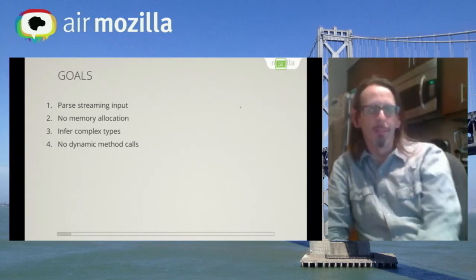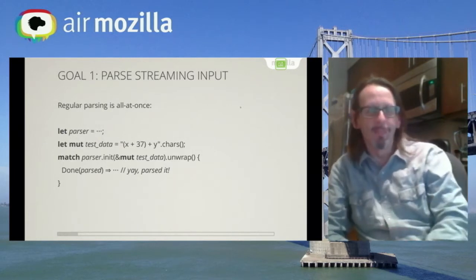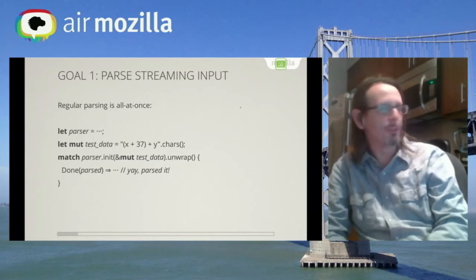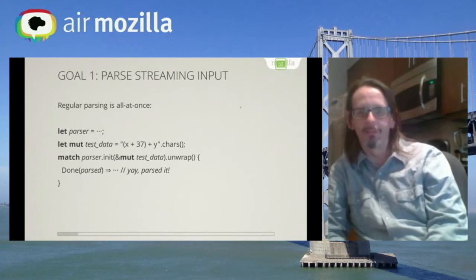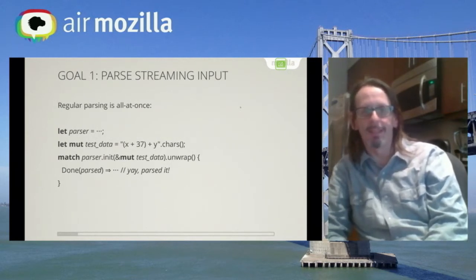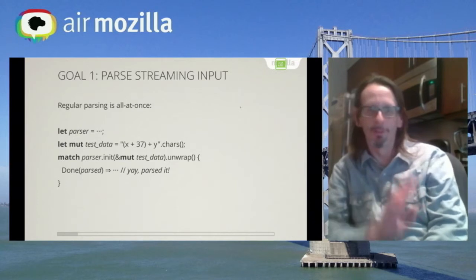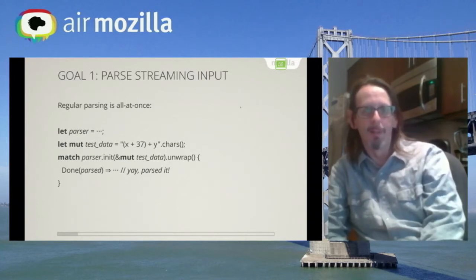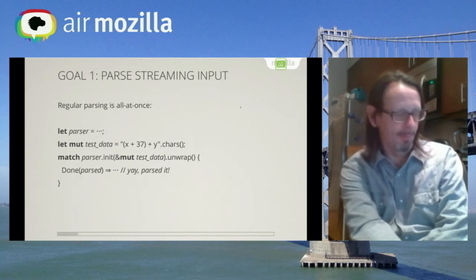Goals two and four are probably the most important — they're about efficiency: minimizing space usage of the generated parser and minimizing its runtime. So what does this actually look like? Here is actual Parcel code parsing a little expression language. From somewhere we get a parser — don't really care where yet — then we feed it data. We feed it the string 'X + 37 + Y', and with some wrapper code to get an iterator off that, we pass the data in, get it back out, and we parsed it.